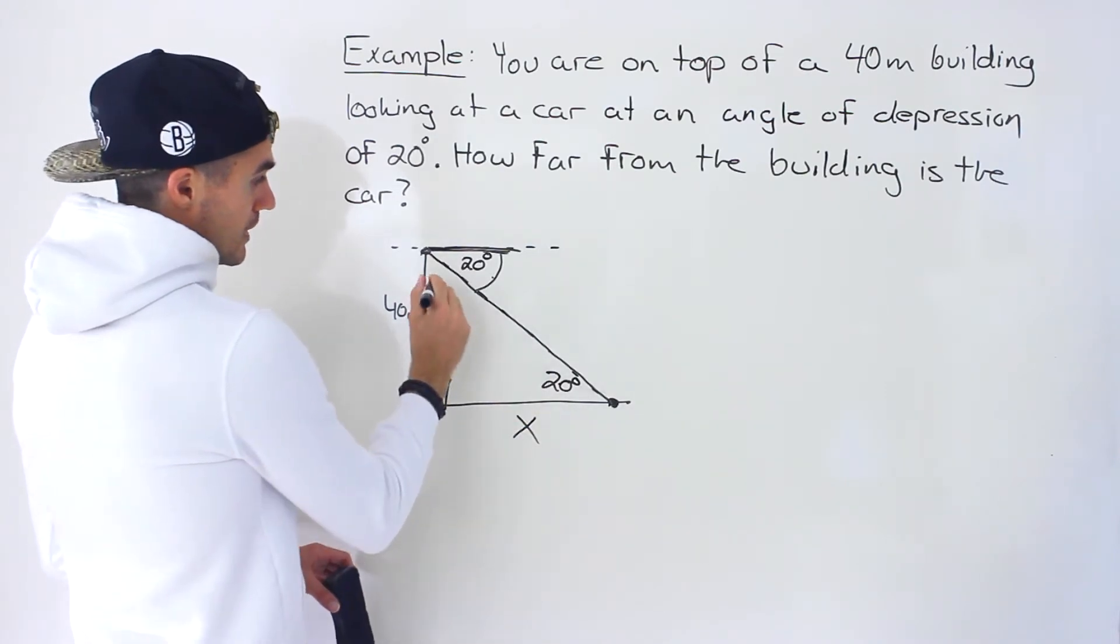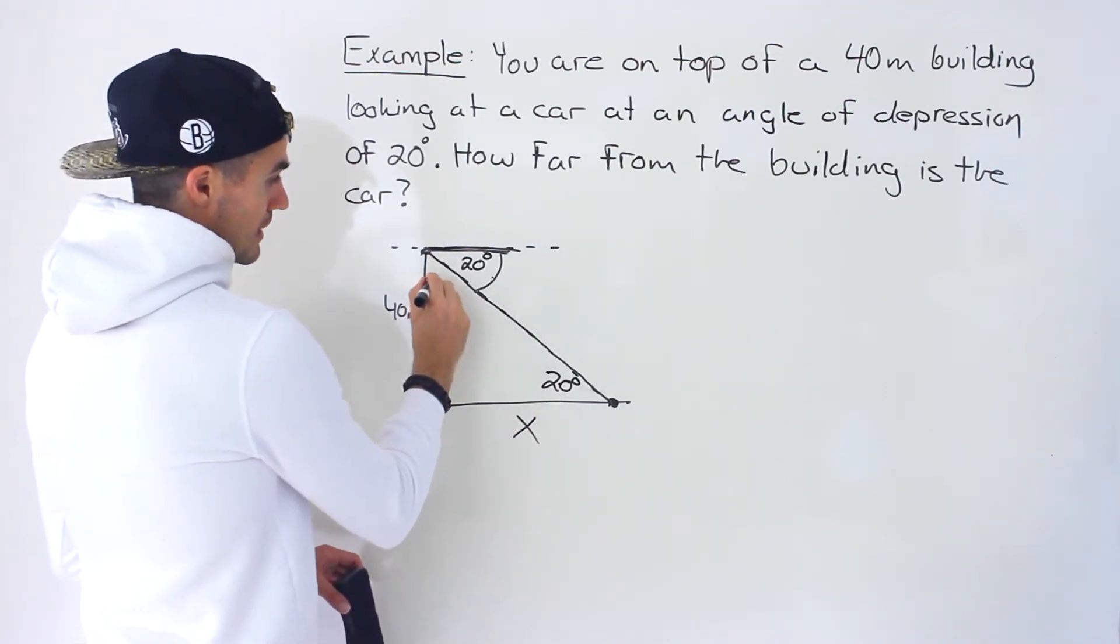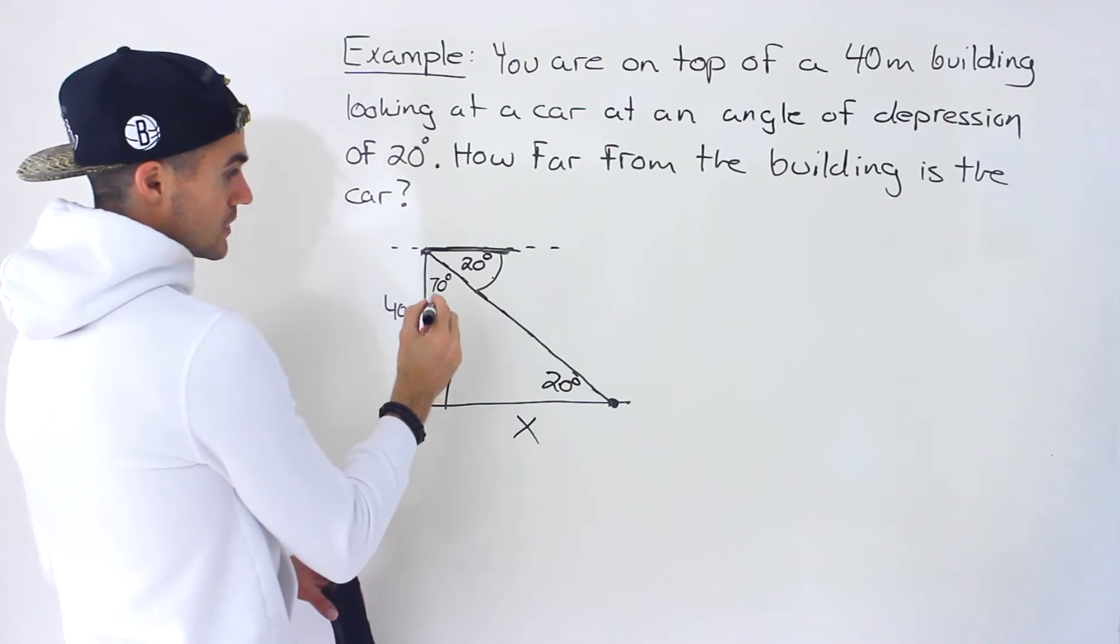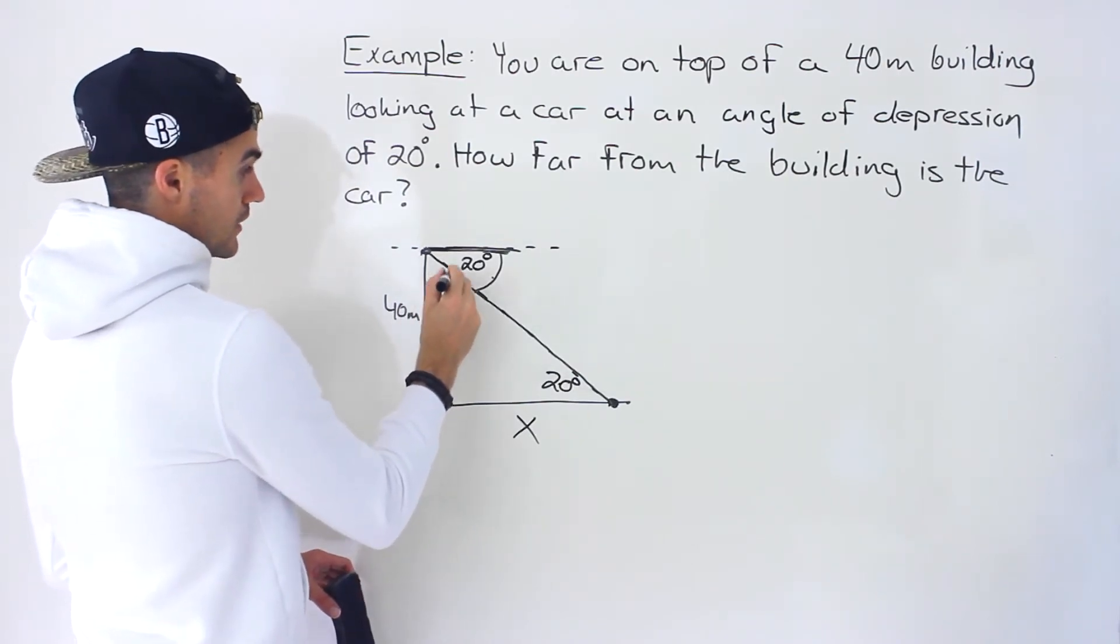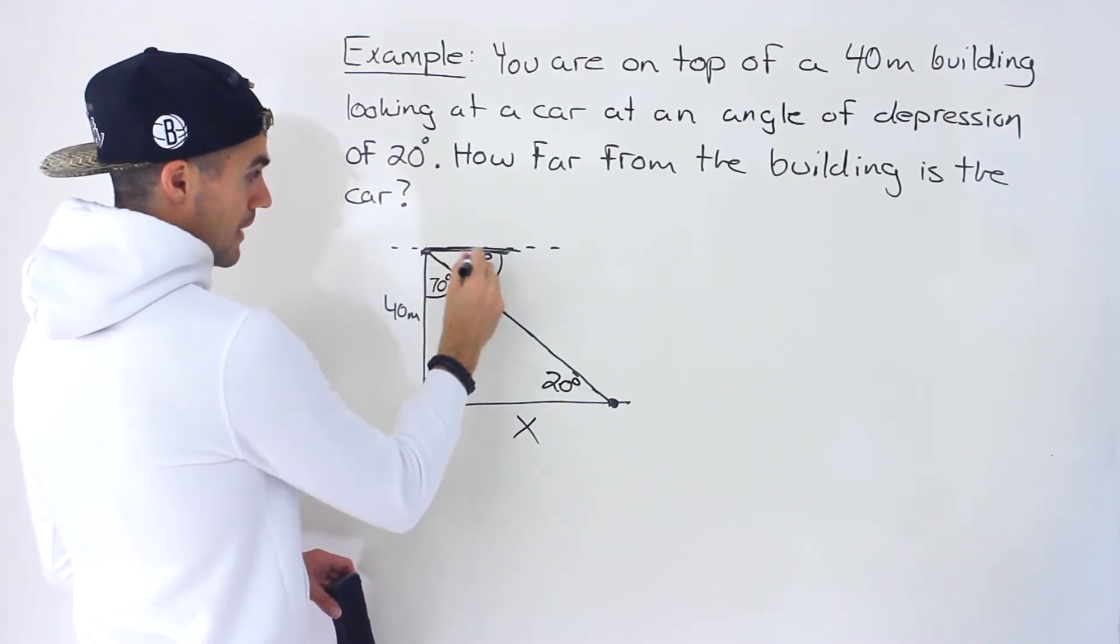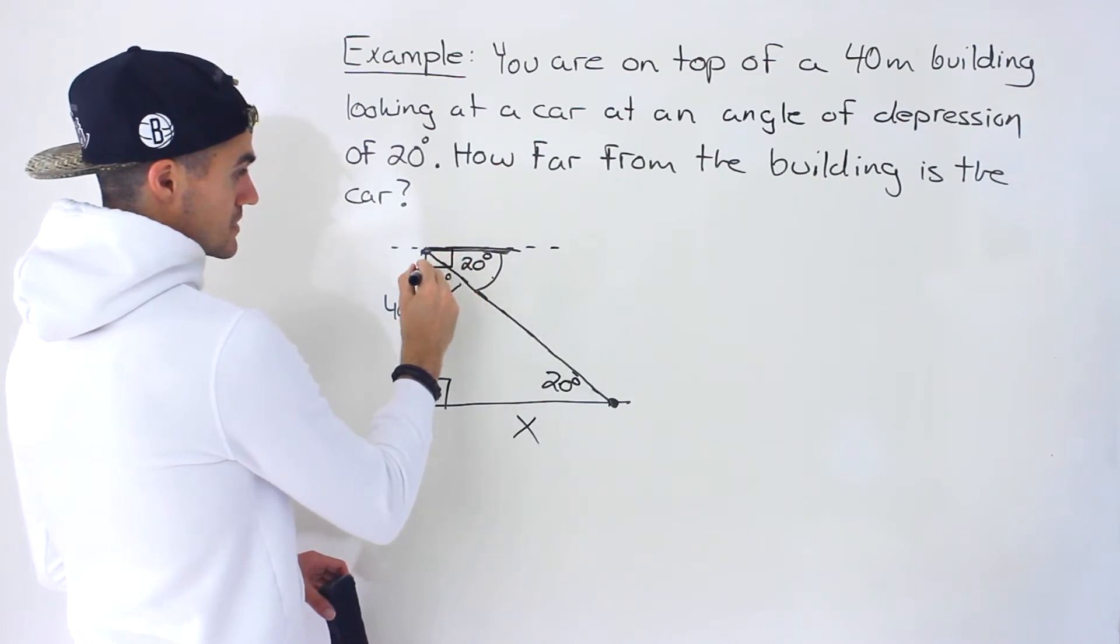Another way to do it is you can also make this angle 70 degrees, right? Because this angle here would be 90 minus 20 because this here is a right angle.